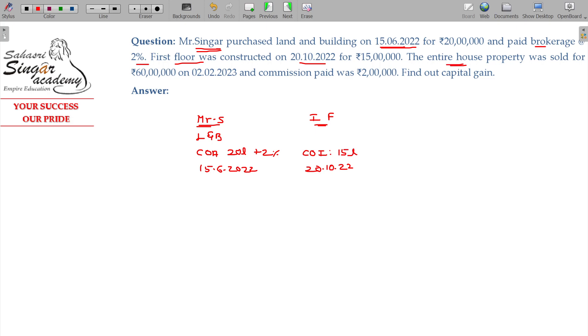The entire house property was sold for Rs. 60 lakhs on 2-2-2023. It is a sale. Entire land and building at the rate of 60 lakhs. The date of 2-2-2023.